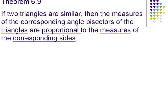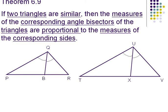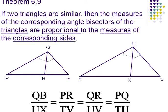Another theorem here. If two triangles are similar, then the measures of their corresponding angle bisectors of the triangles are proportional to the measure of the corresponding sides. So, here within this diagram, we have two angle bisectors, QB and UX. And QB compared to UX is the same as all the sides, PR to UV, QR to UV, and PQ to TU.